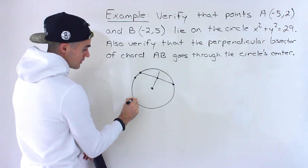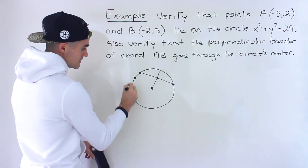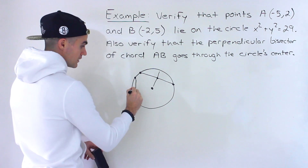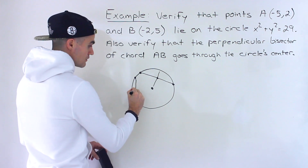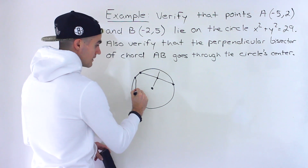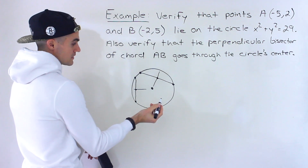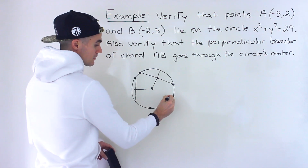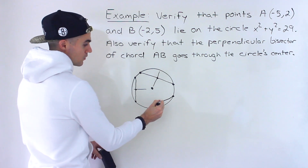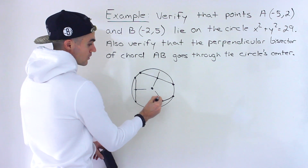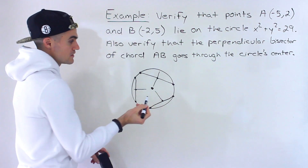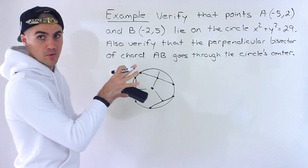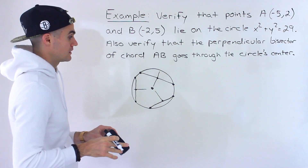That holds for any chord you draw. So if we draw a chord from here to here, the perpendicular bisector goes through the center. Draw another chord, its perpendicular bisector also goes through the center. That's a general rule, and that's what we're going to be showing in this specific case.